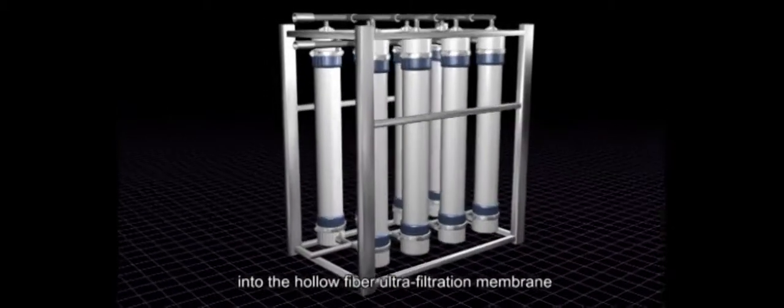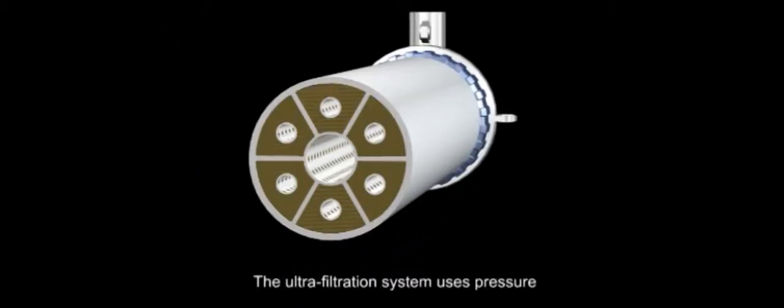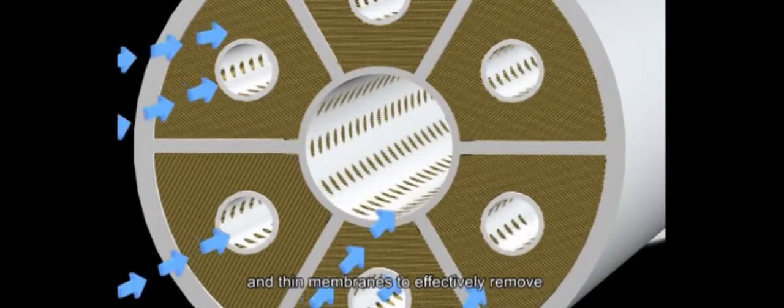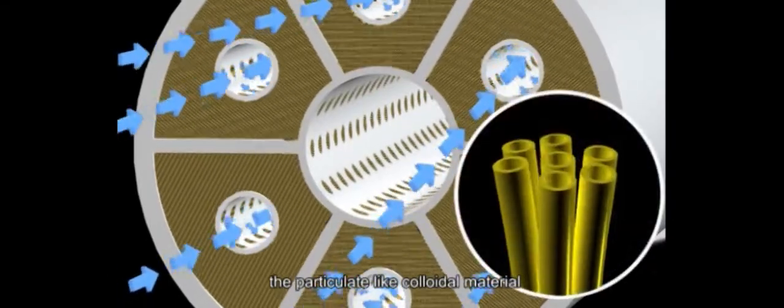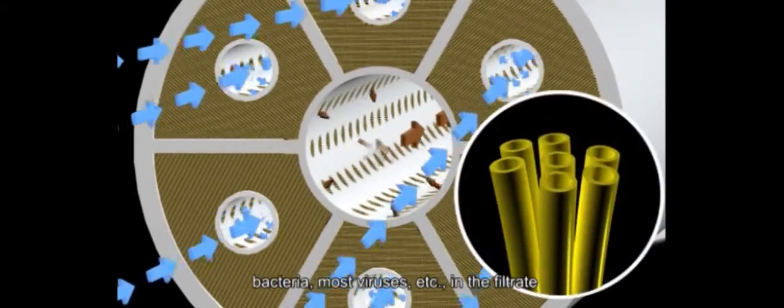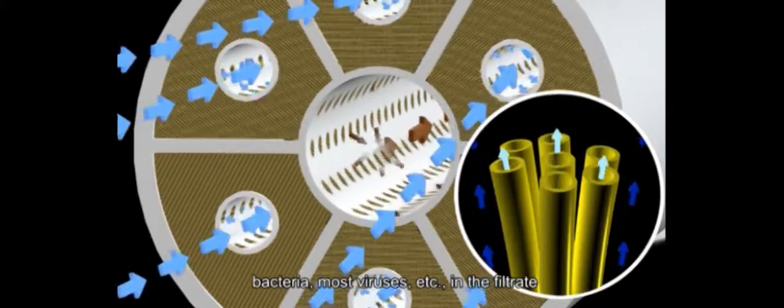The filtrate from the disc filter will then flow into the hollow fiber ultrafiltration membrane for second stage filtration. The ultrafiltration system uses pressure and thin membranes to effectively remove the particulate like colloidal material, bacteria, most viruses, etc. in the filtrate.